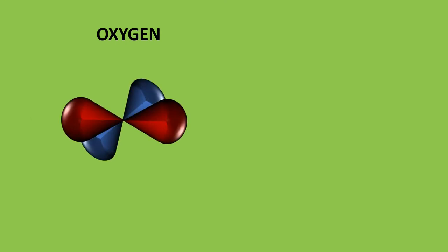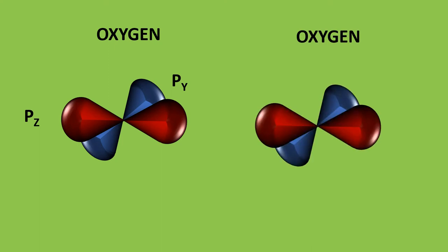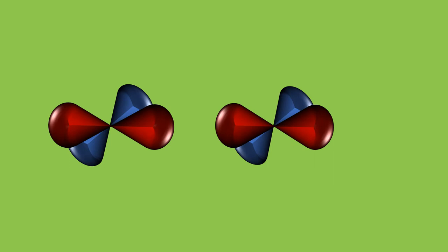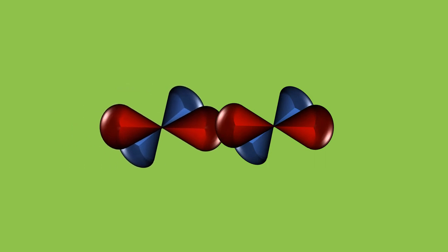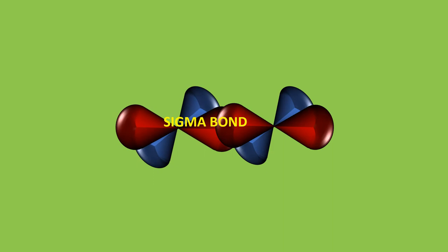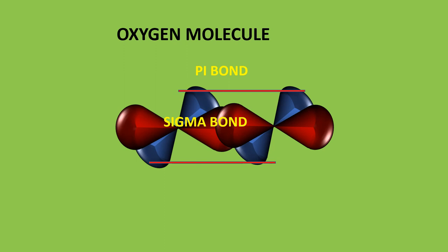The Pz and Py orbitals of one oxygen atom participate in bonding with the Pz and Py orbitals of another oxygen atom. The Pz orbital of one oxygen atom overlaps with the Pz orbital of another oxygen atom to form a sigma bond. The Py orbital of one oxygen atom overlaps with the Py orbital of another oxygen atom laterally, perpendicular to the internucleus axis, giving a pi bond. Hence, the oxygen molecule has a double bond.